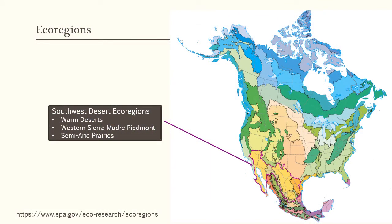The ecoregions we're going to talk about today are all part of the southwestern desert ecoregions, which include the warm deserts in yellow, and then the western Sierra Madre Piedmont — a Piedmont being a level plain at the base of mountains, often a grass-dominated ecosystem. Way in south Texas we also have the semi-arid prairies. That area outlined in purple on this map represents the ecoregions we'll cover today.